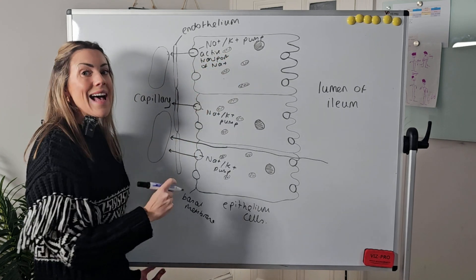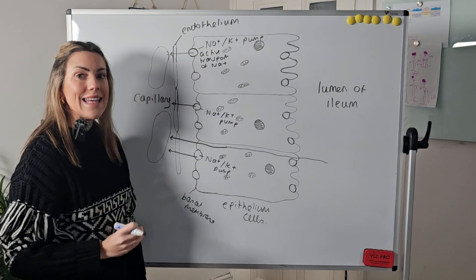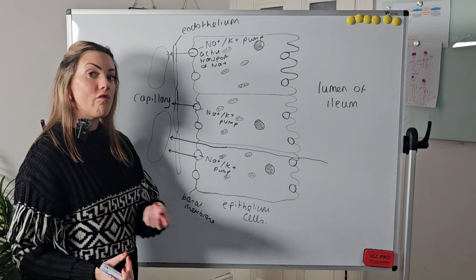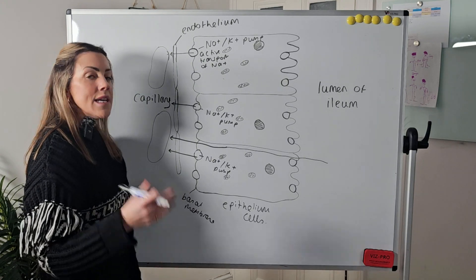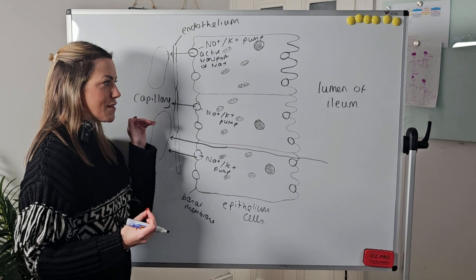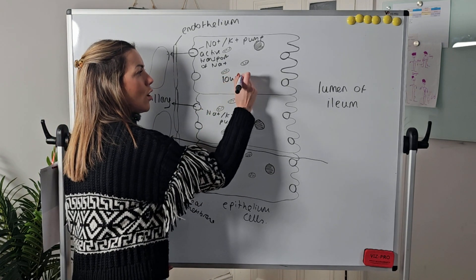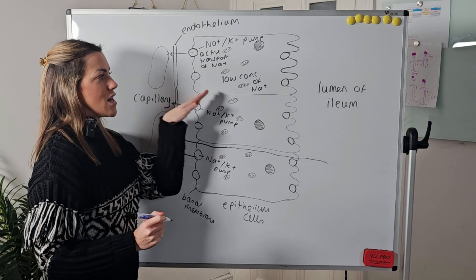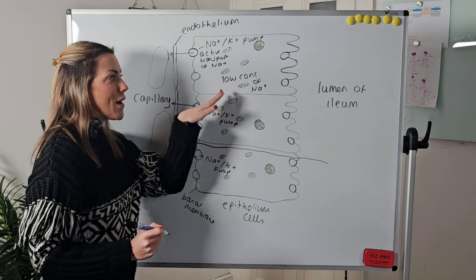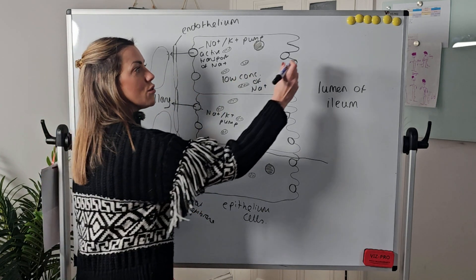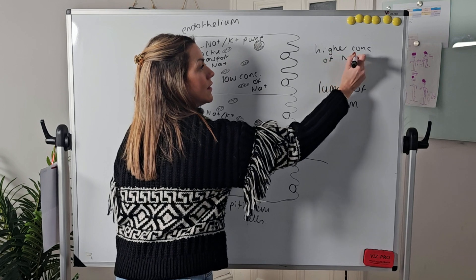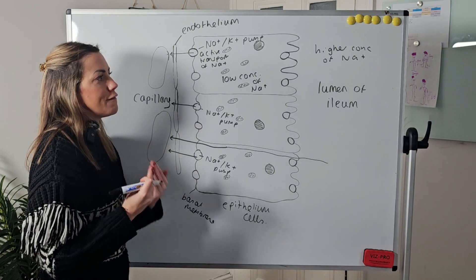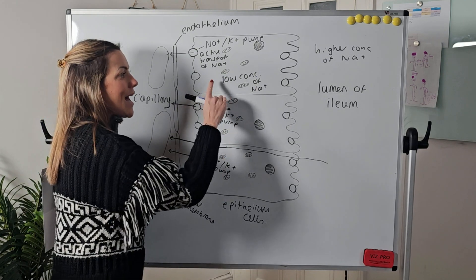They are actively transporting sodium ions out of the epithelial cell and into the bloodstream using a sodium-potassium pump, or carrier protein. It's active transport so it requires energy from ATP. Because those sodium ions are continuously being pumped out, there is always a low concentration of sodium ions inside the epithelial cells. If there's always a low concentration in here compared to the higher concentration in the lumen, we've established and maintained a concentration gradient — a higher concentration of sodium ions in the lumen and a lower concentration in the epithelial cell.